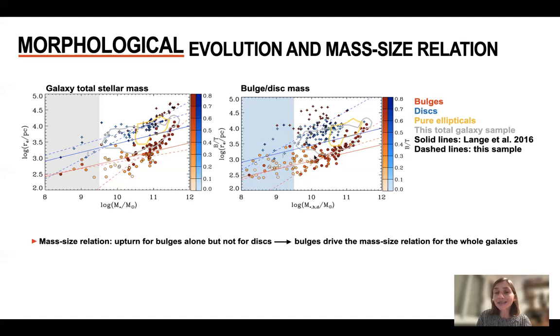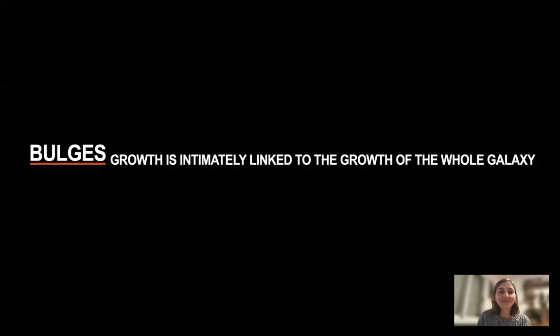So what these plots are telling us is that bulges are the drivers of the mass-size relation we see for the whole galaxy — because when we look only at disks, there's no relation at all. We saw before that bulges formed first, and now we see that the growth of bulges is intimately linked to the growth of the whole galaxy, and they also seem to drive the mass-size relation we appreciate for the galaxies as a whole.